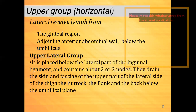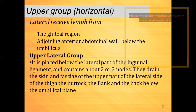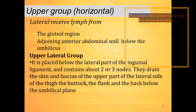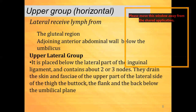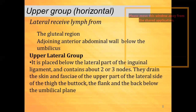The upper group — called the horizontal group — has two subgroups: lateral and medial. The lateral group receives lymph from the gluteal region and the adjoining anterior abdominal wall below the umbilicus. It is placed below the lateral part of the inguinal ligament and contains about two or three nodes. They drain the skin and fascia of the upper part of the lateral side of the thigh, the buttock, the flank, and the back below the umbilical plane.